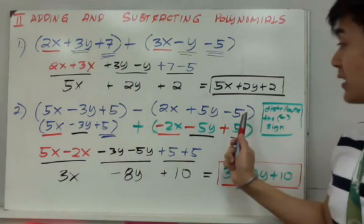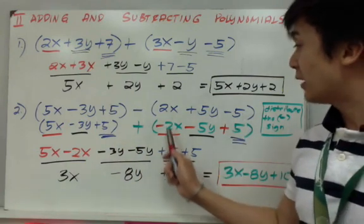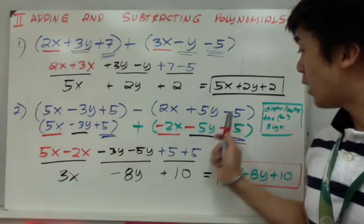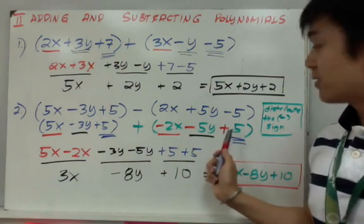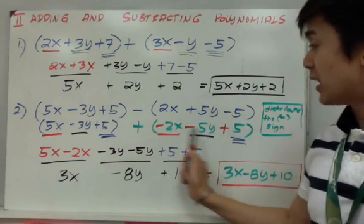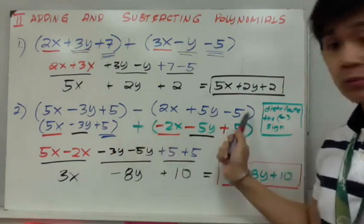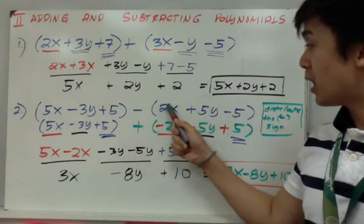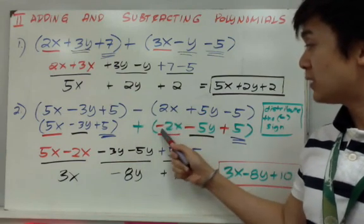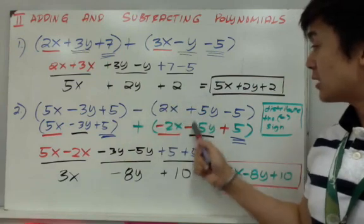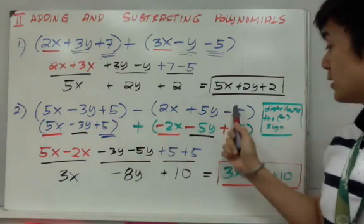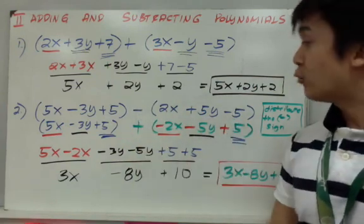Then I will switch all my signs inside the parentheses into -2x - 5y + 5. The reasoning behind this is that I can distribute the negative sign to my second parentheses. If I distribute it, negative times positive is negative, negative times positive is negative, and negative times negative is positive.